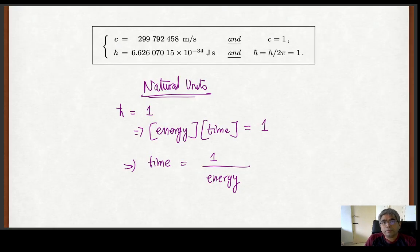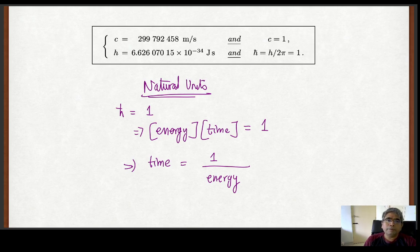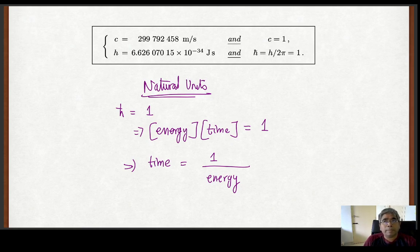Before going to see how we treat these issues at subatomic scales, let me introduce something called natural units. Most of the time in quantum mechanics we always keep the ℏ and c values explicitly — c is the speed of light and ℏ is the Planck constant at the order of 10⁻³⁴ joule-seconds. Now since we are going to deal with quantum mechanical systems also at relativistic speeds, we will set both c = 1 and ℏ = 1.